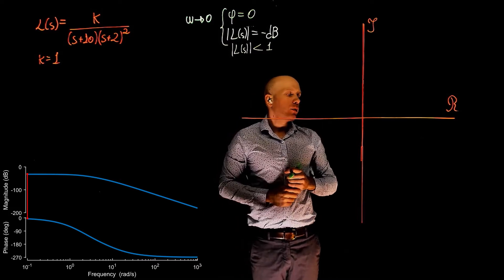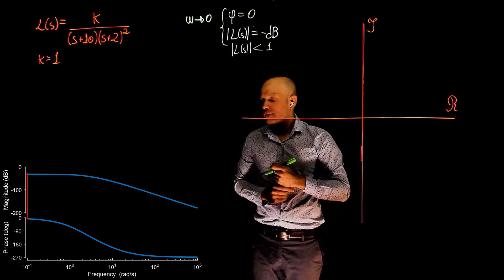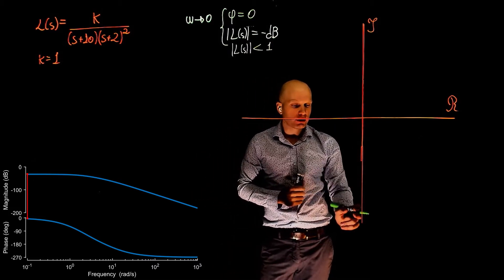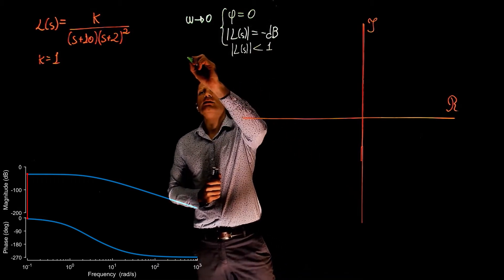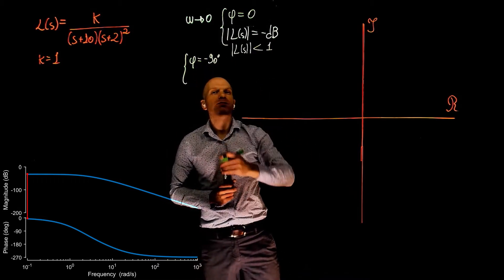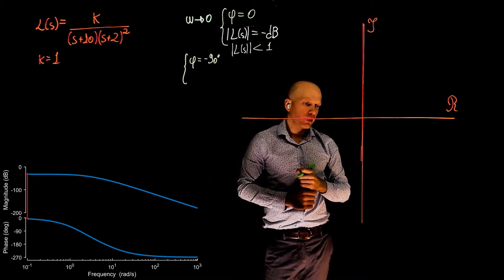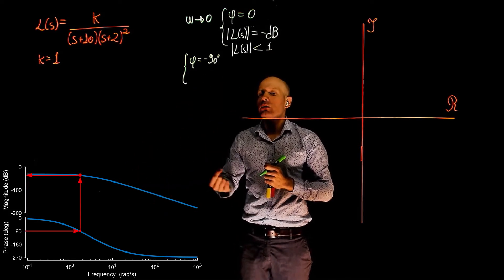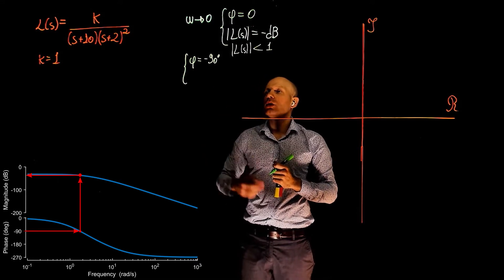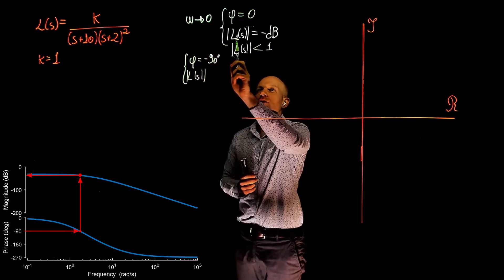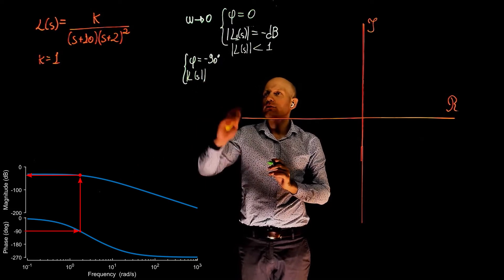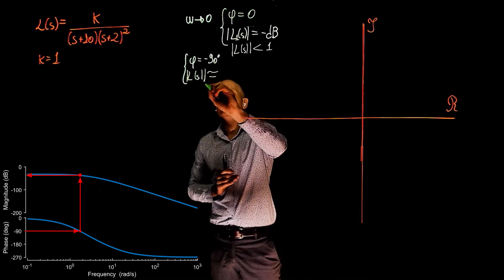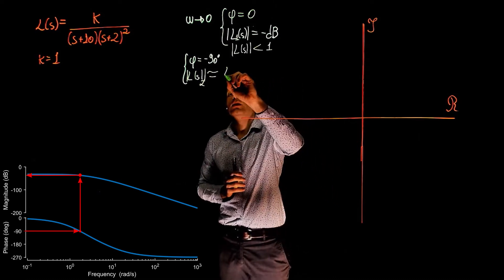Now let's look at the point where we cross the imaginary axis on the negative side. The phase is negative 90 degrees. We draw this line from negative 90 degrees to the point where we intersect the phase plot, go up and look at the magnitude. If we call the magnitude when omega tends to 0 as L1, and we look at what we get when the phase is negative 90 degrees, we see that we are very close to the magnitude we had before — it's slightly lower. The magnitude at this point, let's call it L2, is approximately equal to L1.